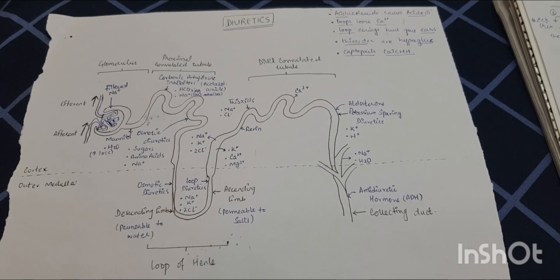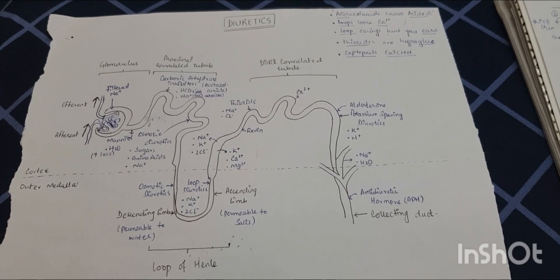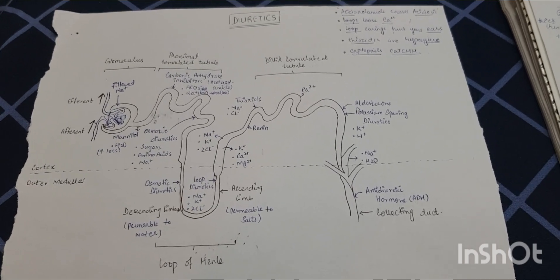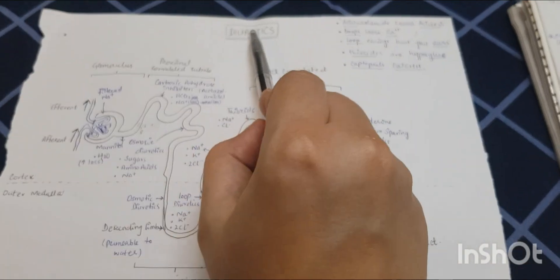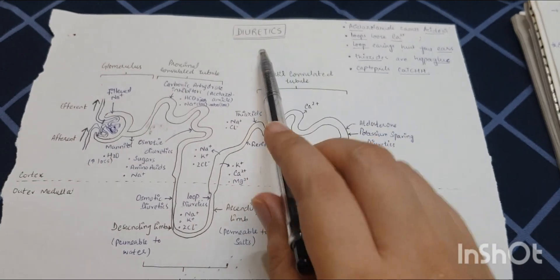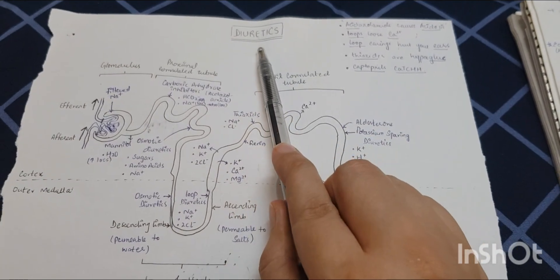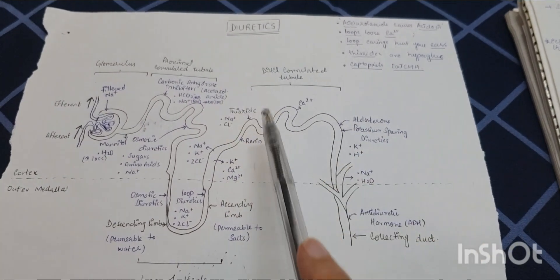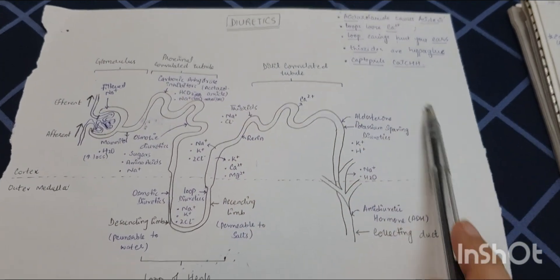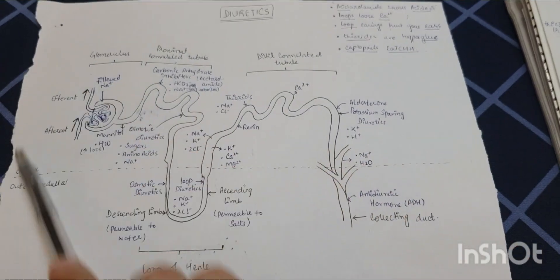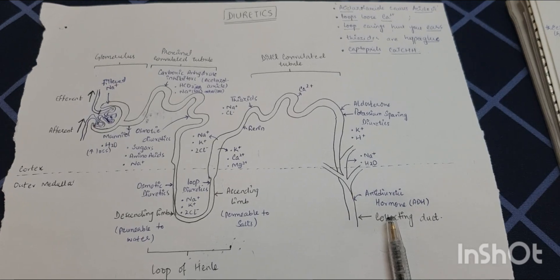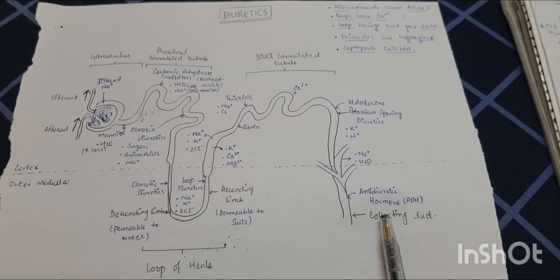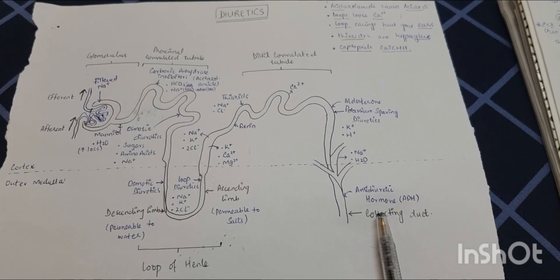In this video, I'm going to discuss the summarized features of diuretics and their effect on the functional unit of the kidney, that is the nephron. Let's start with the basic structure of the nephron.